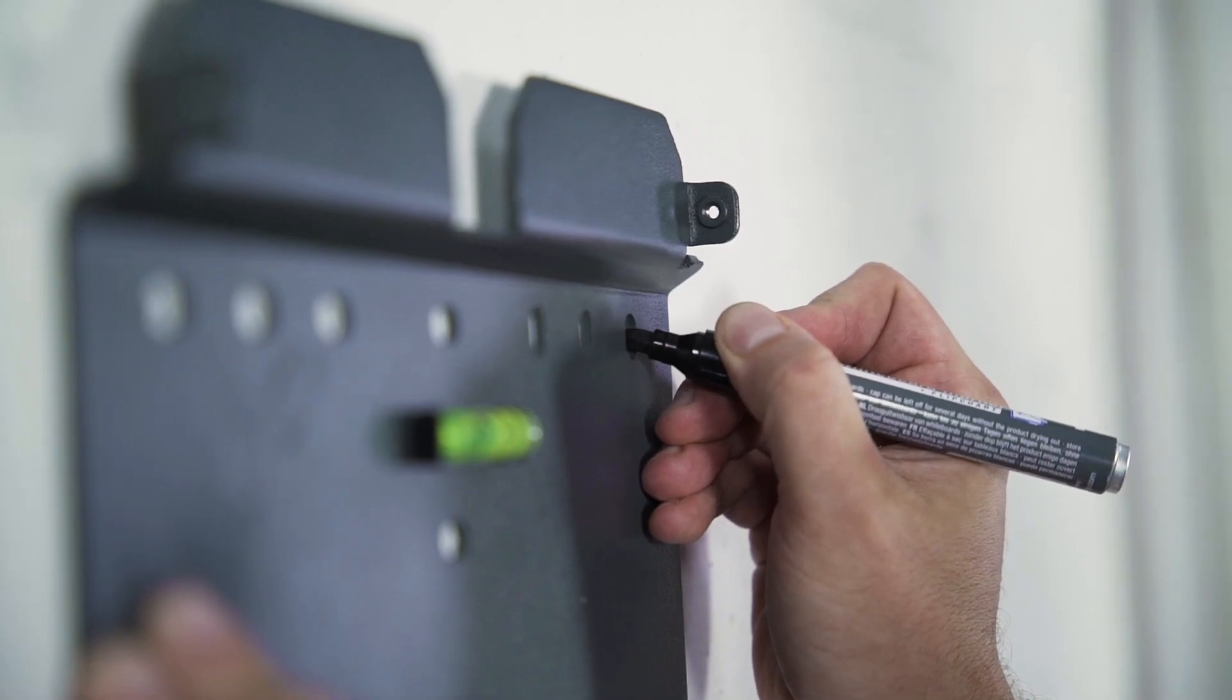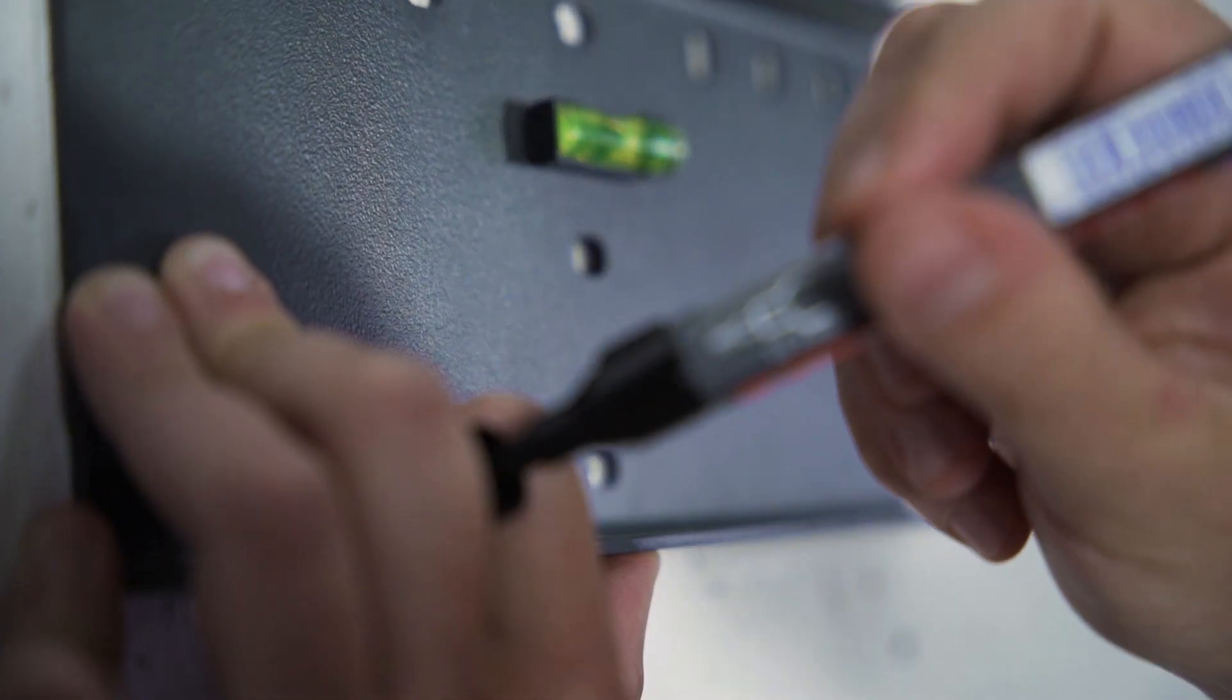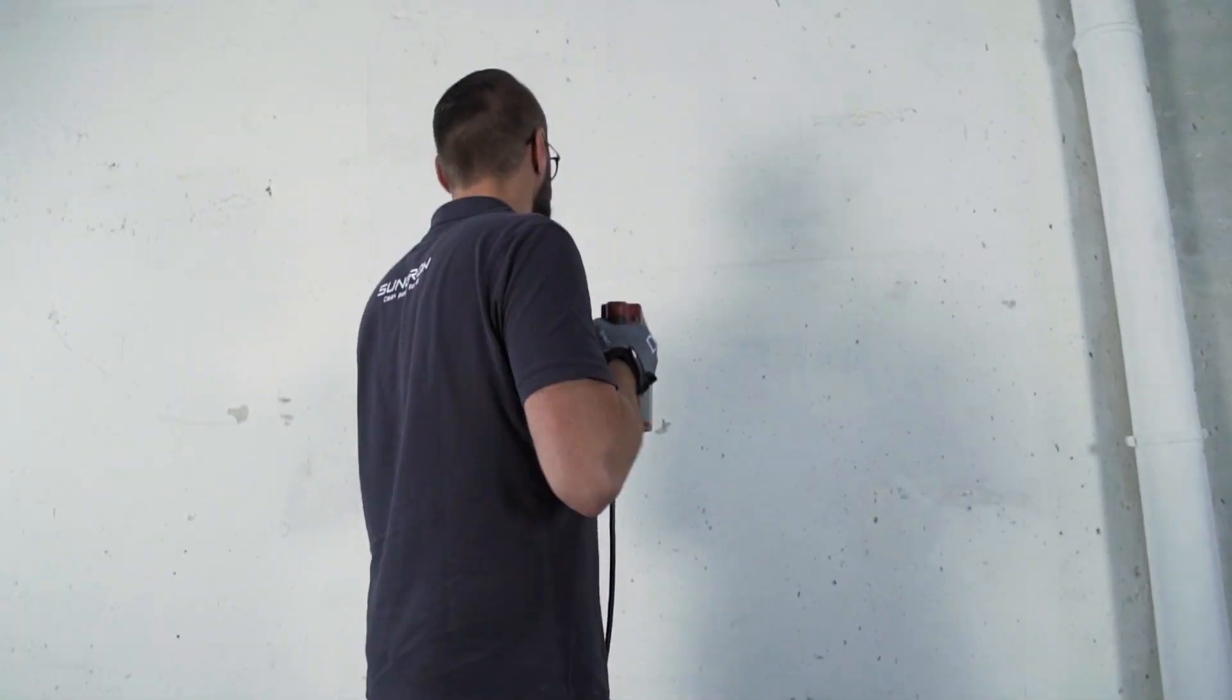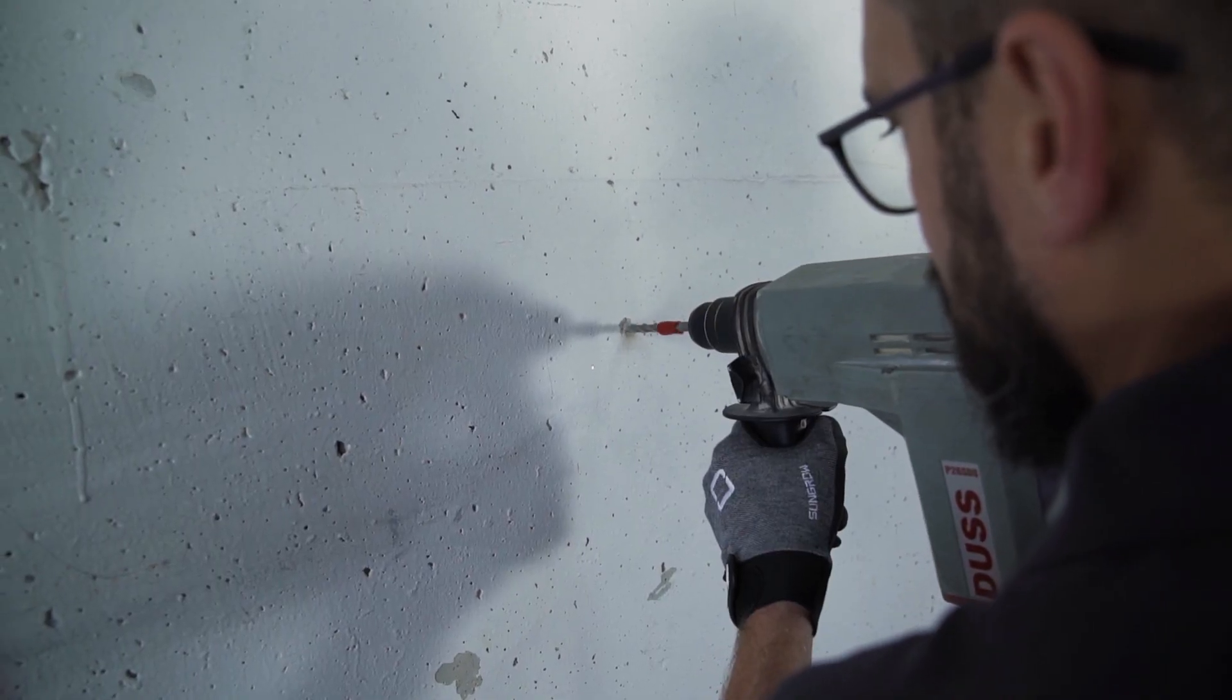Just hold it against the wall, make sure it's horizontal, and mark the drill holes with the pen. Before you start drilling, you should make sure that there are no wires running through the wall that you could damage. Take your drill with a 10 millimeter drill bit and drill at least 70 millimeters deep into the wall at the marked points.